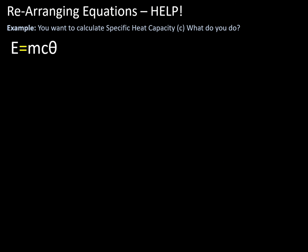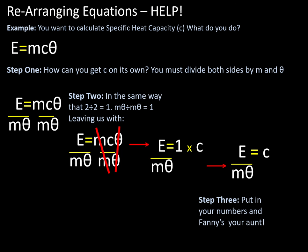Slightly more difficult example. E equals mc theta. So we want to calculate specific heat capacity. So we need to rearrange this equation to get c on its own. So this time, how do we do that? We need to divide both sides by m and theta.